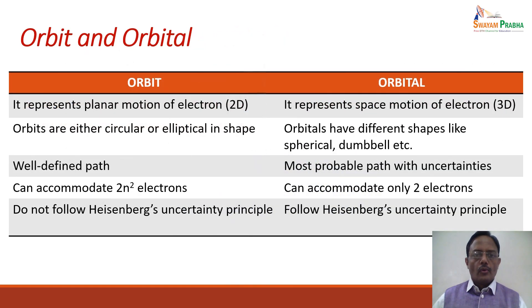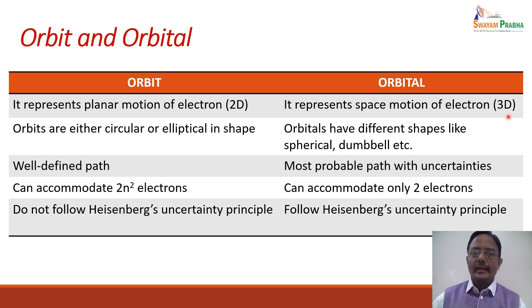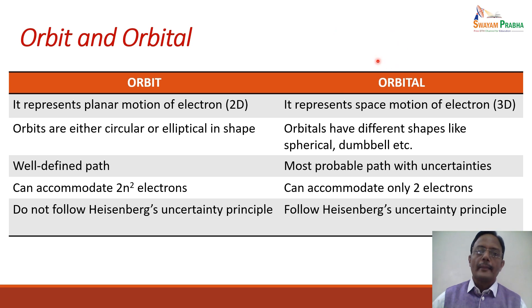We will discuss the fundamental difference between an orbit and an orbital. When I say orbit, it represents the planar motion of the electron in two dimensions. Whereas when we say orbital, it is a space phenomenon or three-dimensional phenomenon. Orbital represents the movement of an electron around the nucleus in three-dimensional space — that is, along X, Y as well as Z directions.